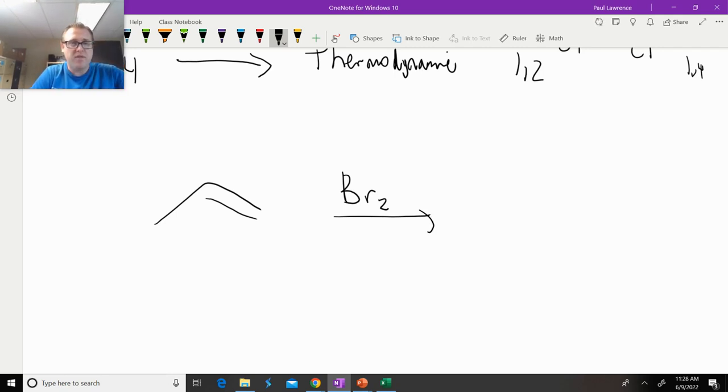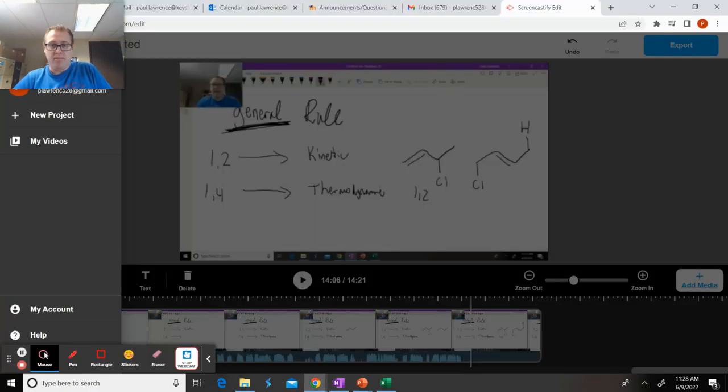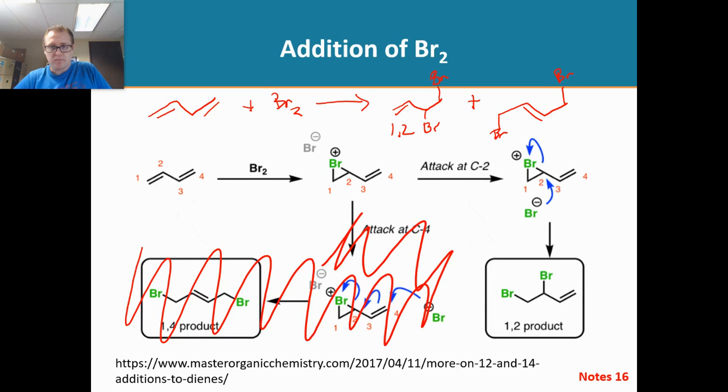What was the first step in that mechanism? It generated a bromonium ion intermediate. Remember that? Well that same mechanism is at play now here.